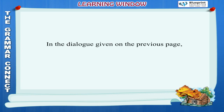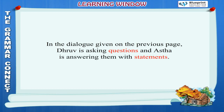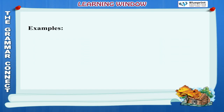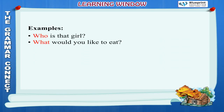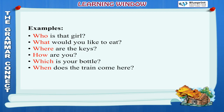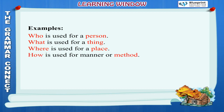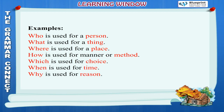Dhruv is asking questions and Aastha is answering them with statements. Questions are sentences that begin with words like what, who, where, how, when, or which. They always end with a question mark. Examples: Who is that girl? What would you like to eat? Where are the keys? How are you? Which is your bottle? When does the train come here? Why are you sitting here? Who is used for a person, what for a thing, where for a place, how for manner, which for choice, when for time, and why for reason.